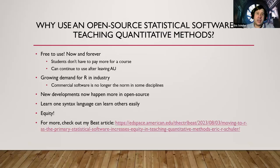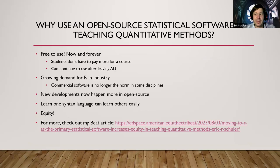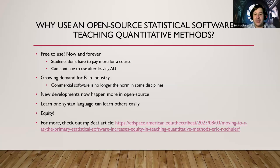Those are some common issues, and this is why I'm such a huge advocate for open source statistical software. It's free — they don't have to pay a cent for it, which makes it more equitable. They can continue using it after AU. The reason I started using R personally was back in about 2017 on my postdoc — I couldn't afford SPSS, couldn't afford SAS on my postdoc salary. So I was like, okay, time to learn R. I really never went back, and I'm thankful for that because I'm able to do a lot more within R compared to other programs.